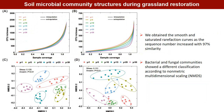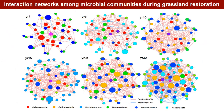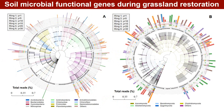We obtained smooth and saturated rarefaction curves, and sequence numbers increased with 97% similarity. Bacterial and fungal communities showed different classifications according to non-metric multidimensional scaling. Networks showed more positive than negative correlations across all networks during grassland restoration. Phylogenetic trees indicate that fungal communities display greater phylogenetic distance than bacterial communities.